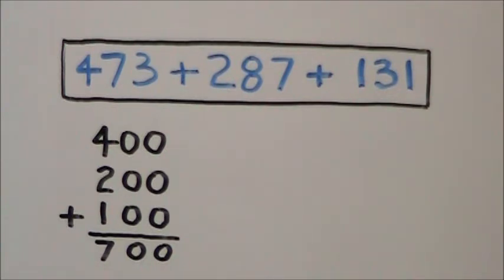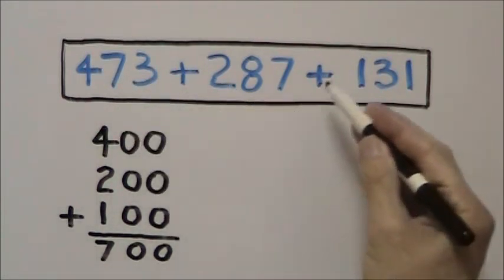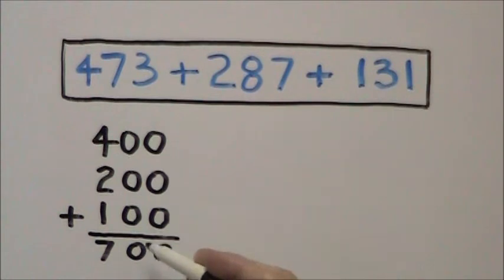So we start with our hundreds column and add up 400 plus 200 plus 100 to get 700.